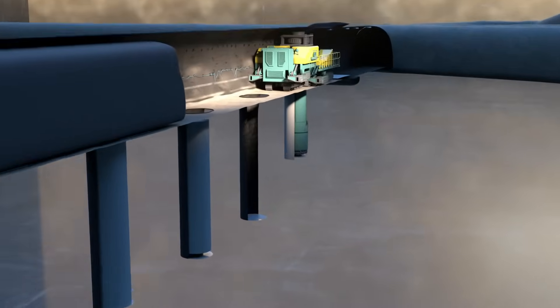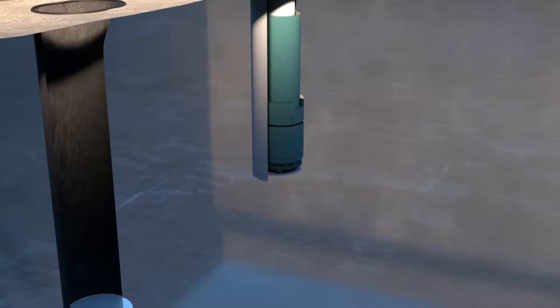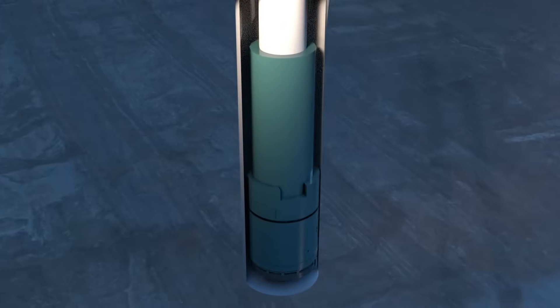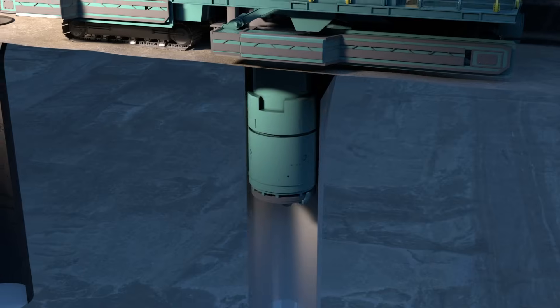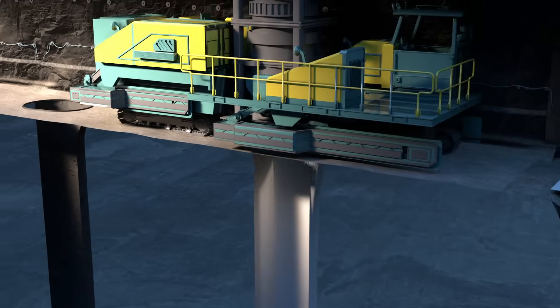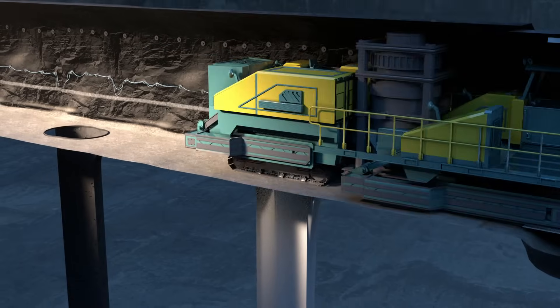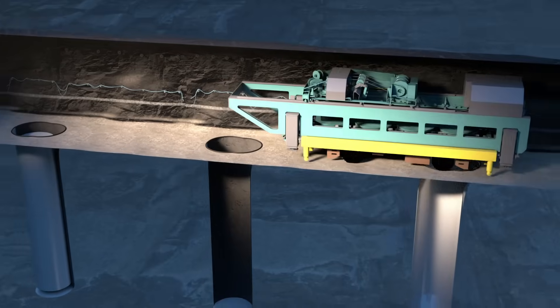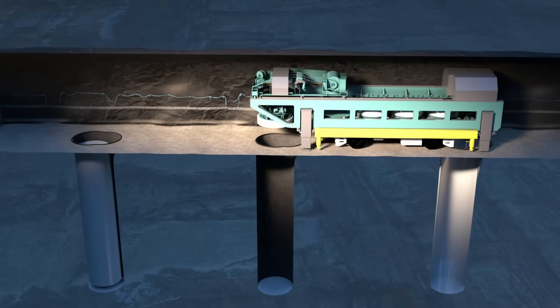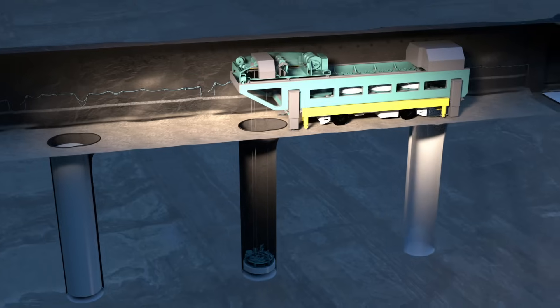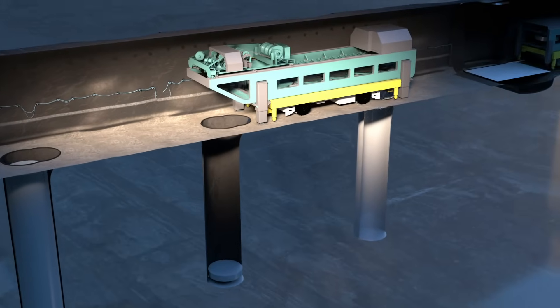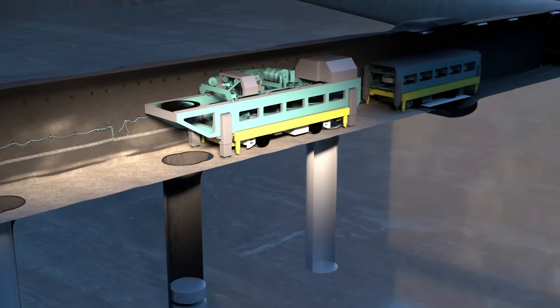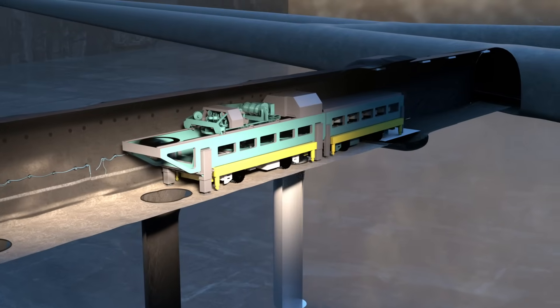Disposal holes are drilled in the tunnels using a purpose-built boring machine. Underground disposal begins when lower bentonite clay blocks are installed in the disposal hole. Bentonite prevents water from moving in proximity of the canister and protects the canister from rock movements.